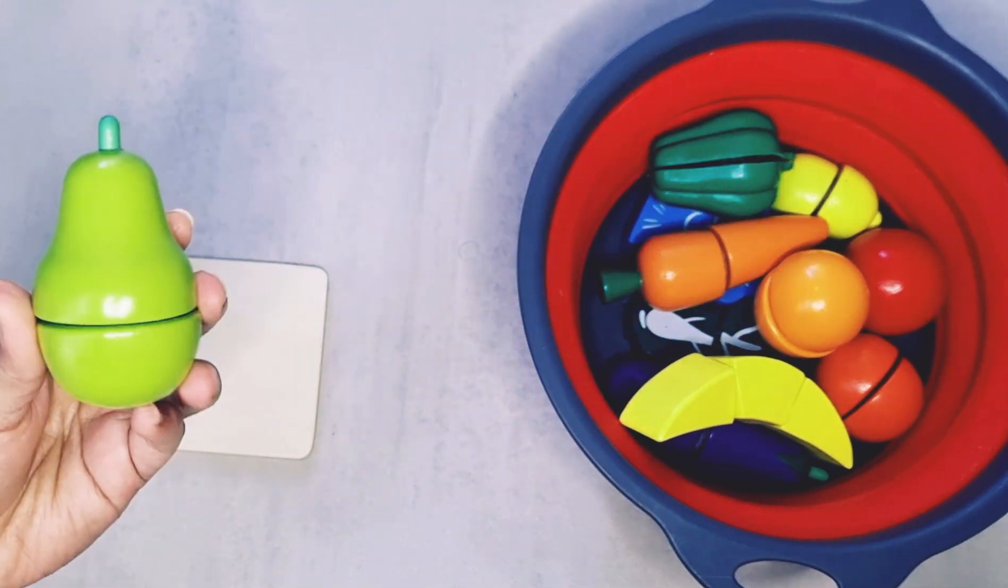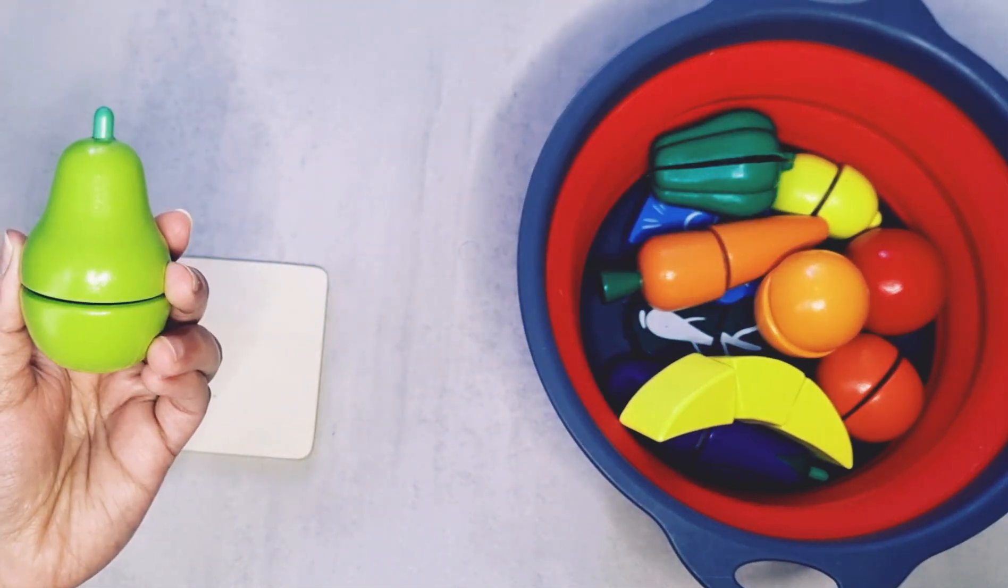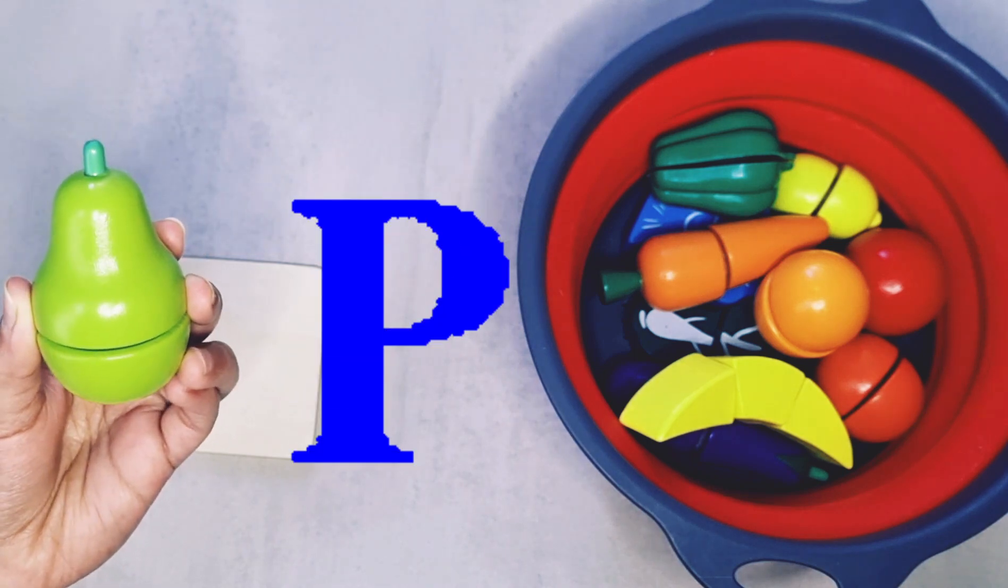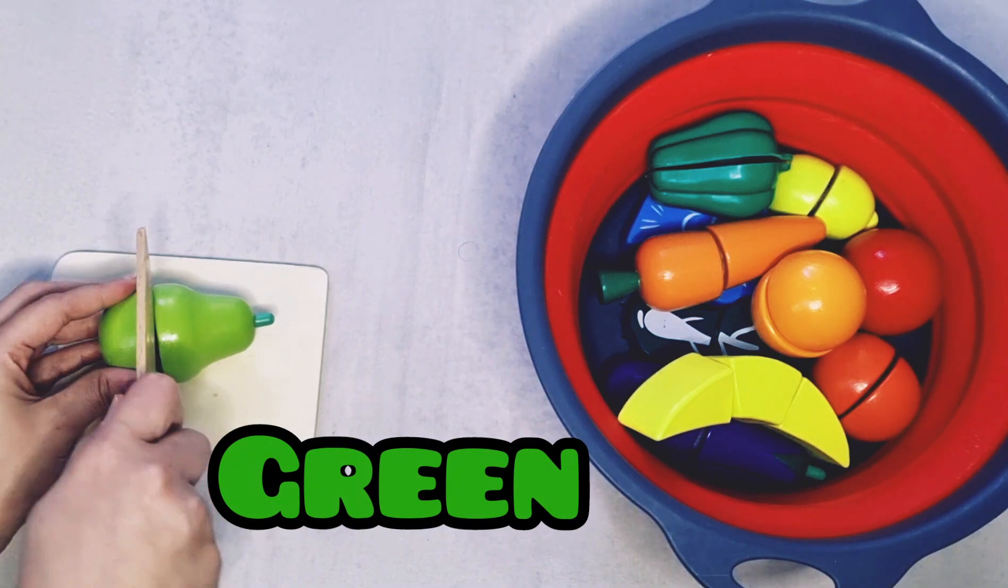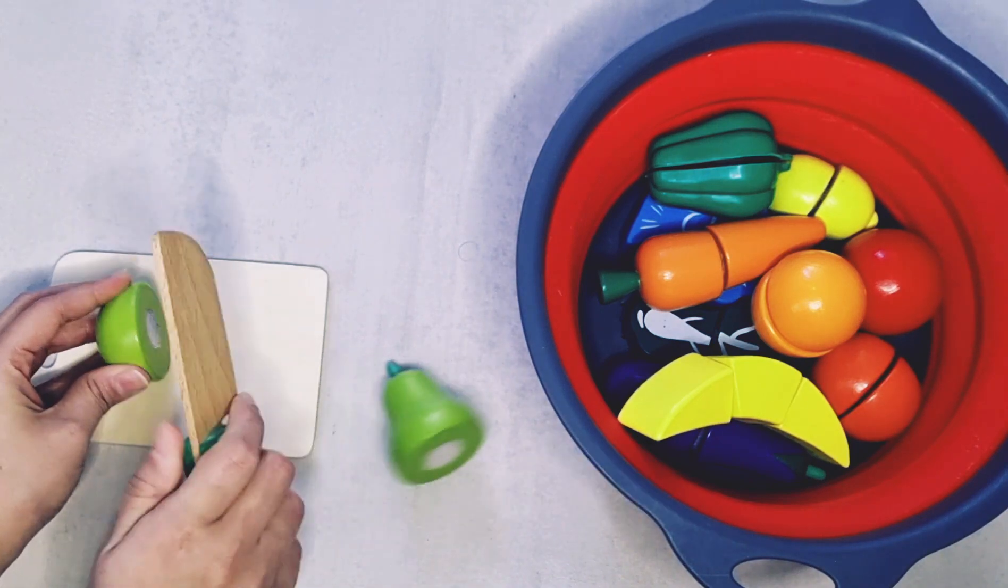Here comes the first one. It's a pear. Pear starts with the letter P and it's green in color. Let's cut the pear. Yes.